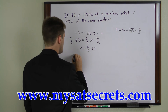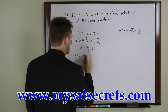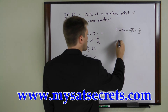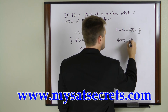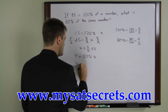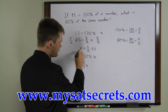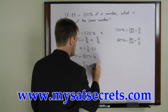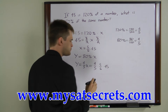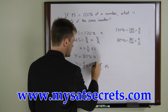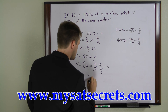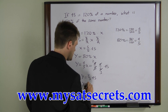The second part asks: what is 80% of x? Let y be the number we're looking for, so: y equals 80% times x. Converting 80% to a fraction gives 4 over 5. Substituting both values: y equals 4 over 5 times 5 over 6 times 45. The 5s cancel, and 4 over 6 simplifies to 2 over 3, giving us: y equals 2 thirds times 45, which equals 30.